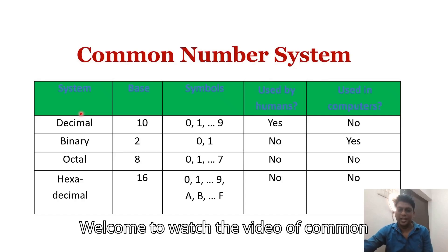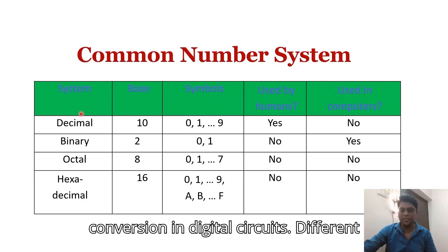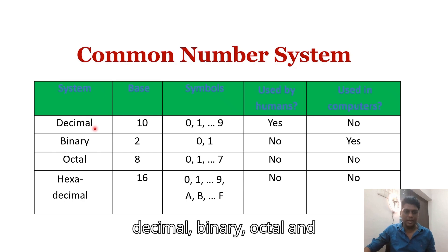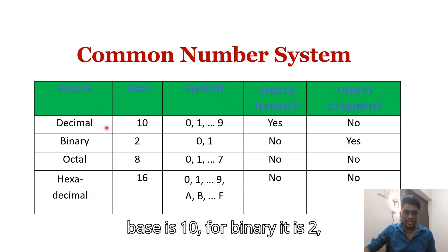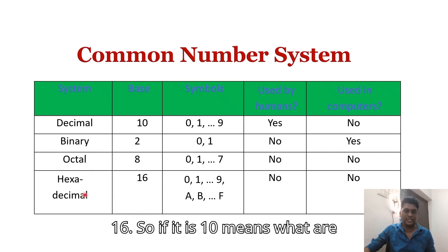Welcome to this video on common number systems and number system conversion in digital circuits. The different types of number systems are decimal, binary, octal, and hexadecimal. The base for decimal is 10, for binary it is 2, for octal it is 8, and for hexadecimal it is 16.